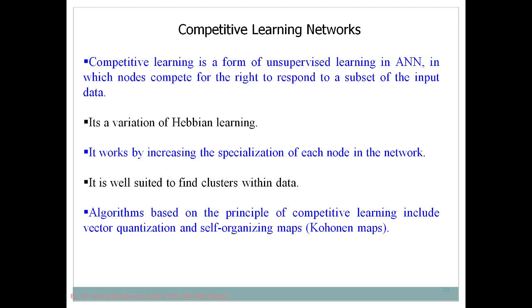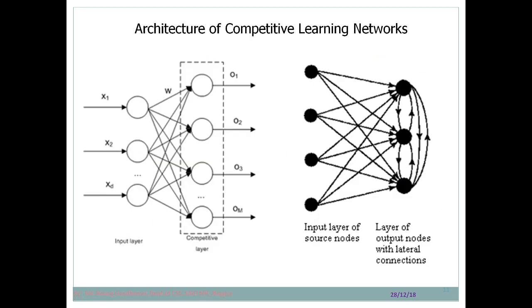Now let's see the architecture of competitive learning. In competitive learning you have an input layer and an output layer, with a number of nodes in each. Every input node is connected to all output nodes. For every edge between two nodes there is a certain weight, and that weight represents the priority of that particular input in the output. The specialty of competitive learning is that all output nodes are also connected with each other.